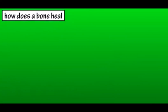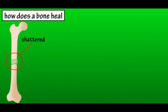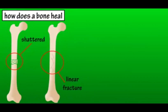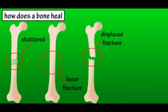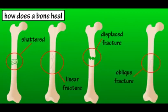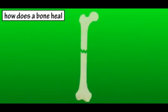Bone Fracture Healing. There are many different types of bone fractures, such as when a bone is shattered into multiple pieces, a linear fracture down the shaft, a displaced fracture where the bone is misaligned, or an oblique fracture where it has a sloped pattern. A doctor will treat each of these as they see fit. In this video, I'm going to go through a very basic explanation of how the body heals a simple fracture.